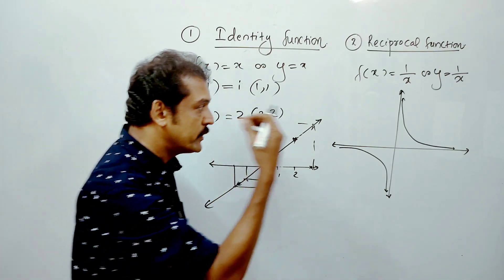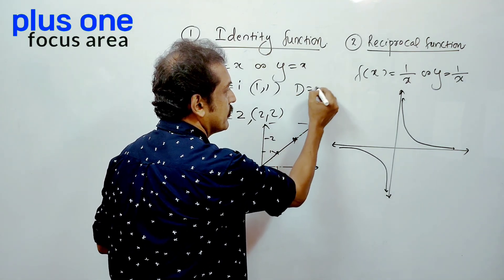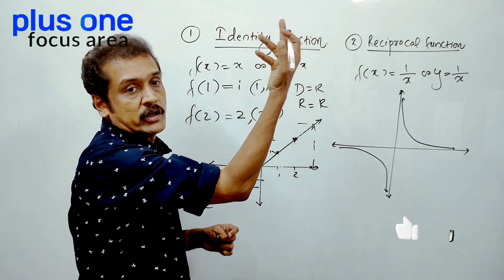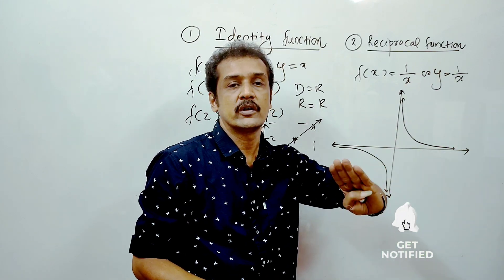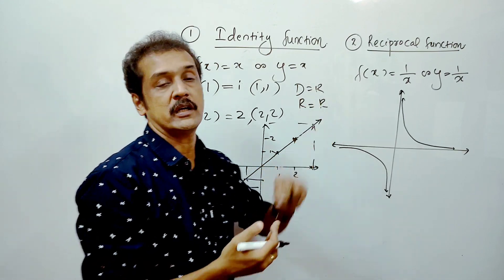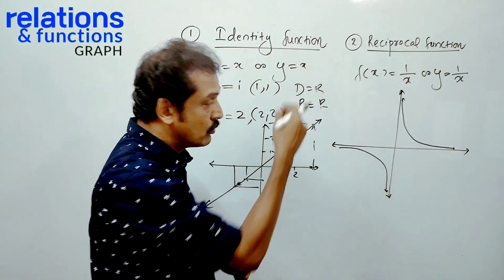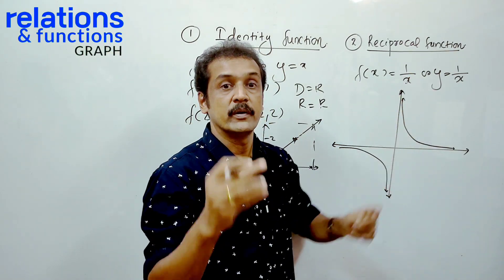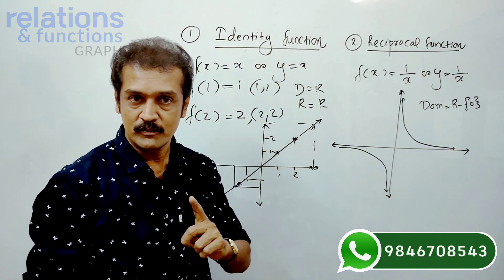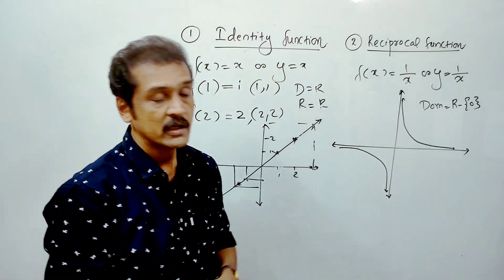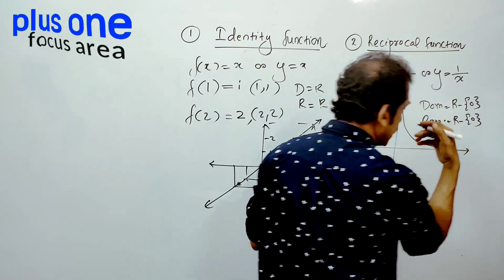This is the domain range. Domain is equal to capital R minus {0}, meaning the set of all real numbers excluding x equals 0. Range is also R minus {0}. Why R minus {0}? Because the numerator is 1, so we can never get an answer of 0. Therefore domain is R minus {0} and range is R minus {0}.